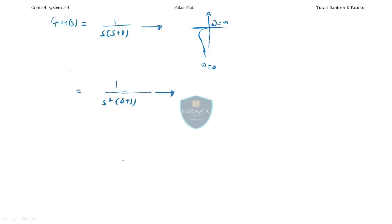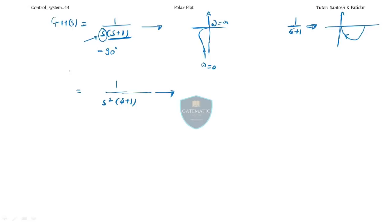When you add a single pole at origin, it shifts the plot by minus 90 degrees. This is our reference plot. If you add a single pole at origin, this entire graph shifts by minus 90 degrees in the clockwise direction. When you add two poles at origin, the entire graph shifts by 180 degrees.